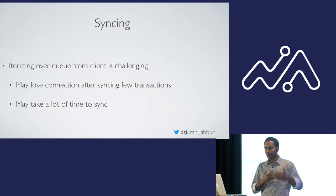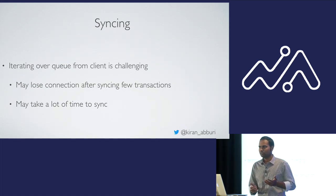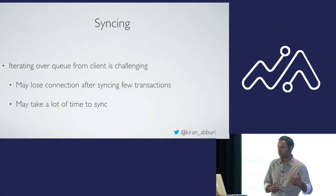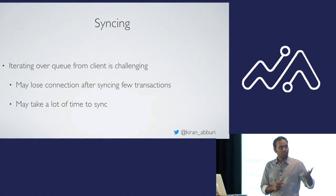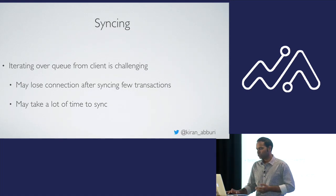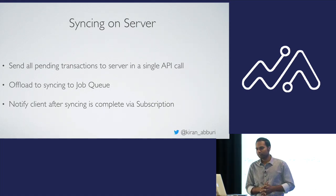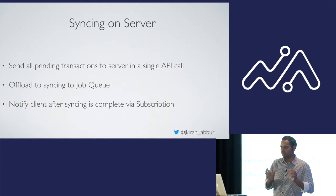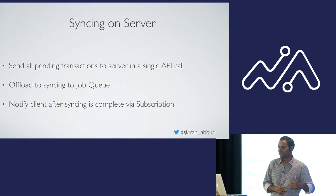Once mutations are queued in offline mode, when the user comes back online we need to sync data to the server. One approach is iterating over all queued items on the client, but challenges arise — the user might lose connectivity mid-sync, or syncing may take too long on the client side. Instead, we shifted syncing to the server: when the user comes back online, we take the entire queue of objects and send it to the server, which handles the sync operation.